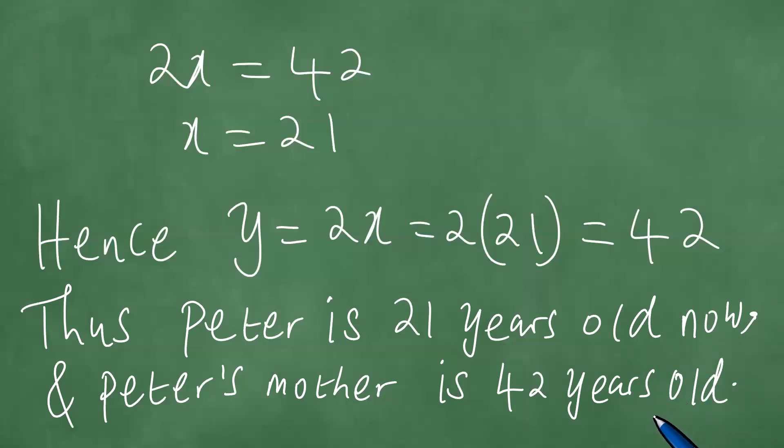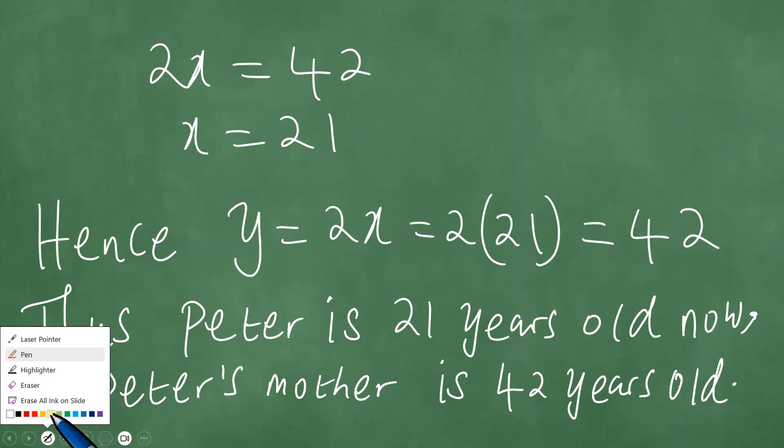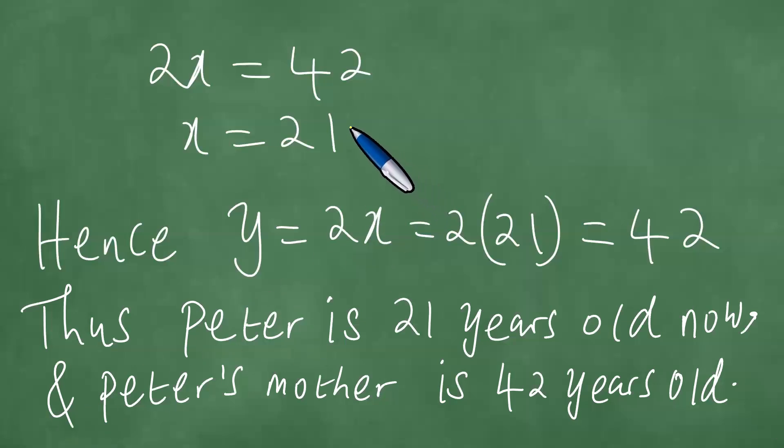This is the solution to the problem. We can see that Peter is 21 years old, and Peter's mother is 42 years old. We have solved this problem in a step by step manner.